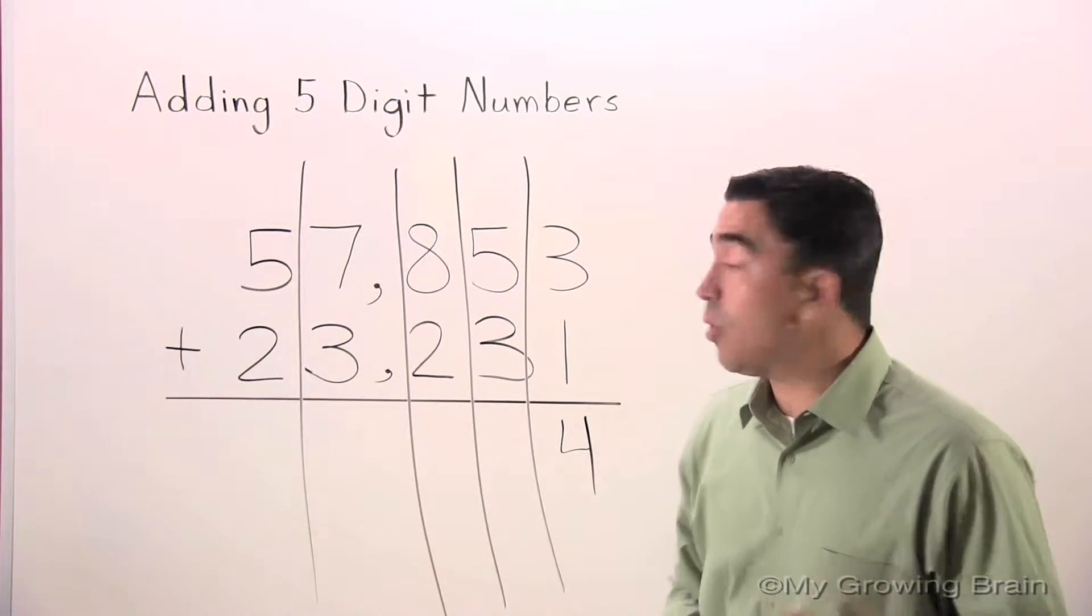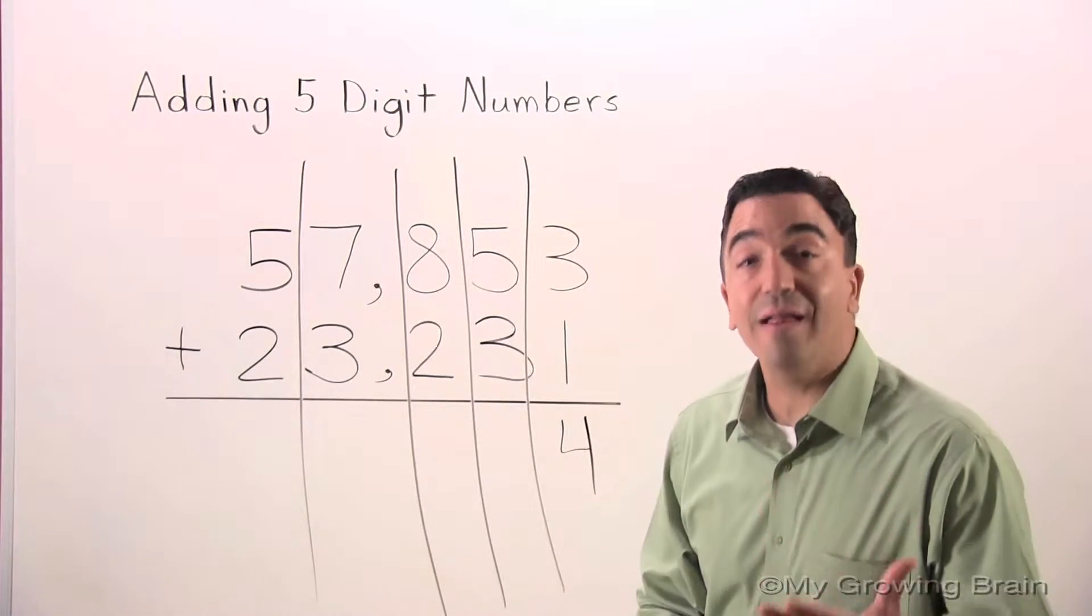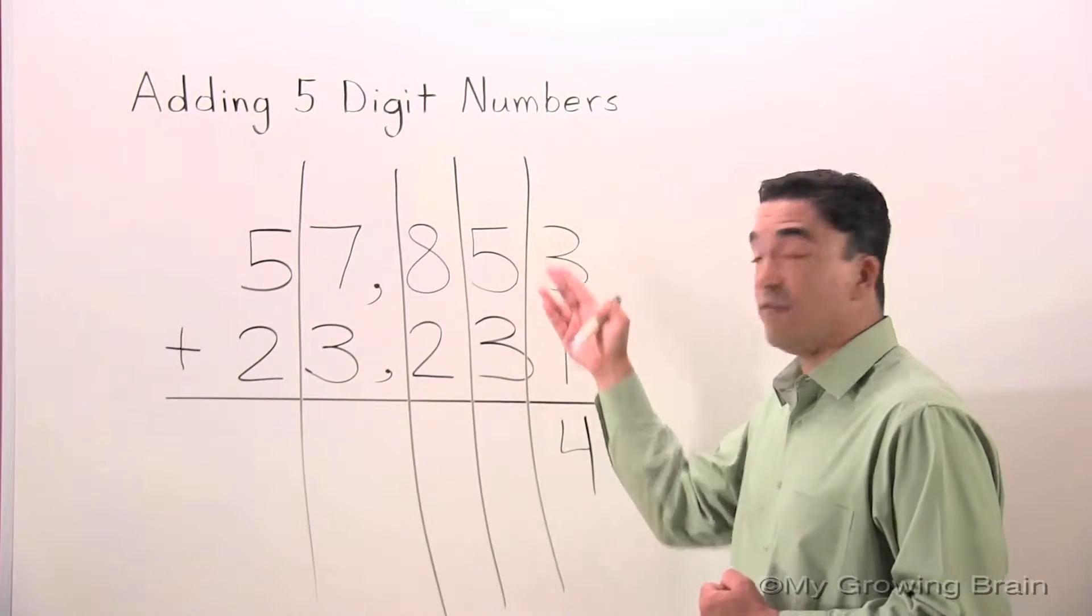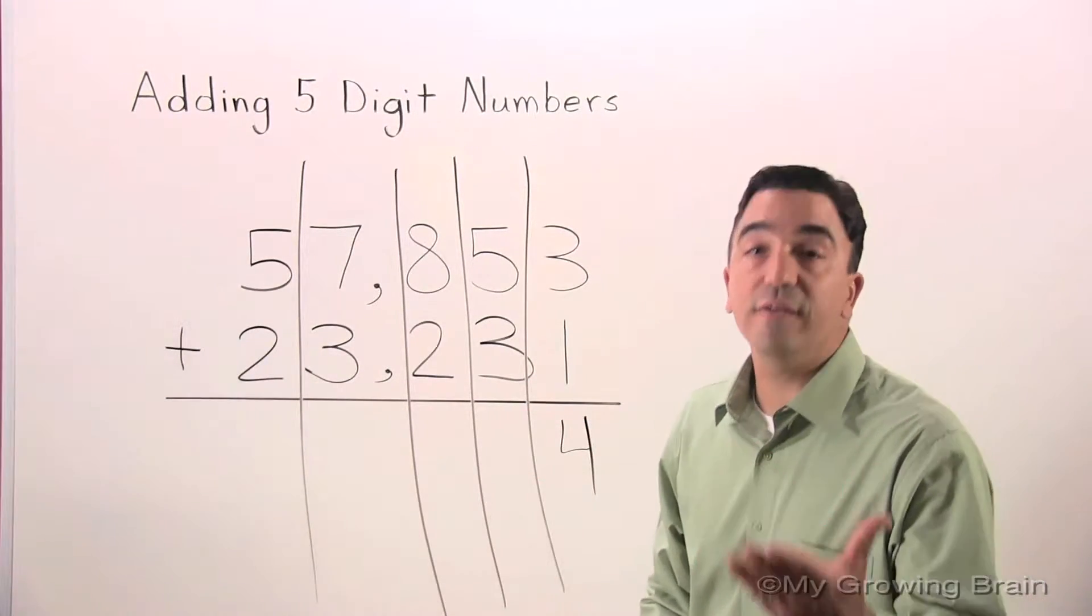Now I will add the two digits in the tens place. Five plus three is eight.